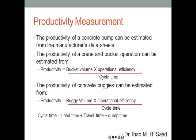The productivity of a concrete pump can be estimated from the manufacturer's data sheets. The productivity of a crane and bucket operation is estimated as: bucket volume × operational efficiency ÷ cycle time — the same equation used for all other equipment, equivalent to volume per cycle multiplied by number of cycles per hour. The productivity of concrete buggies is estimated similarly as: buggy volume × operational efficiency ÷ cycle time, where cycle time includes loading time, travel time, dump time, and return time.